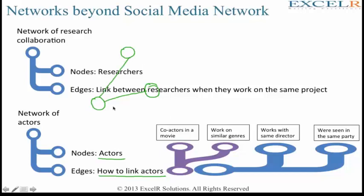Say there is one actor who is connected to these three actors. That probably says that this person works on different movies, which measures the compatibility of this person. This person might be very versatile and willing to work with various other actors. Or maybe he is a side actor who gels well with all the actors. All these are the various measures.